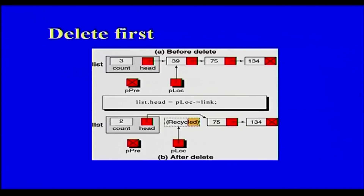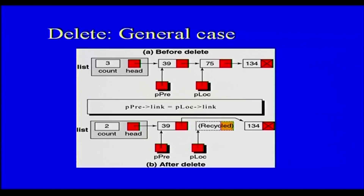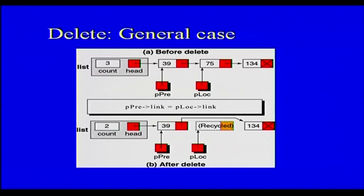In deletion of the first node, the advantage is you know its address from the head pointer. But in a general deletion, if you want to delete some node in the middle, you need the address of the previous node. You have to set the previous node's link to point to the node after the one being deleted — that is the only step for deletion. The deleted node is then the recycled node, which is no longer in the linked list.